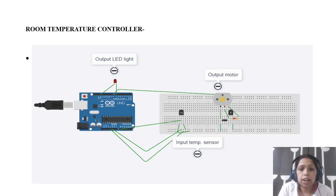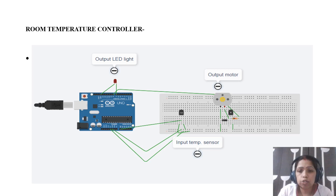Hello friends. Last class I discussed about some applications of Arduino in IoT, like LED control, blinking LED, and the IR detector. I have discussed these things in the last few lectures.